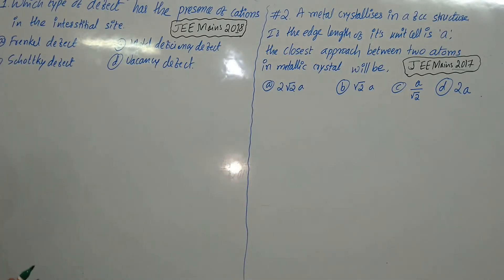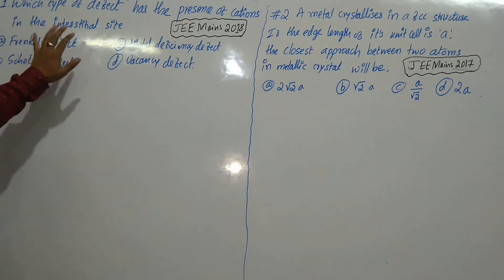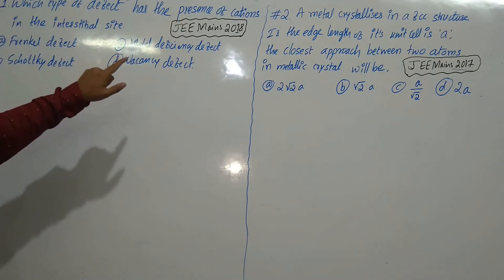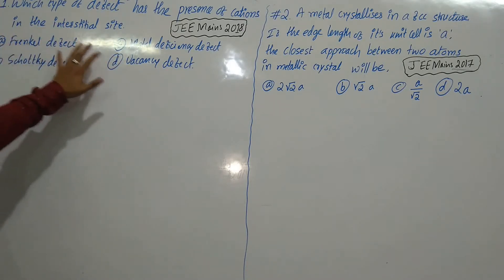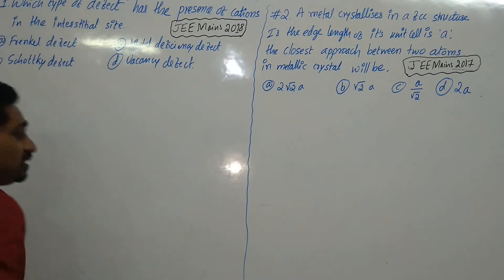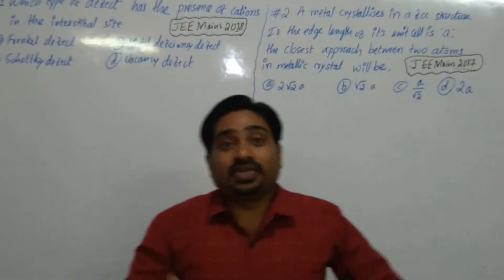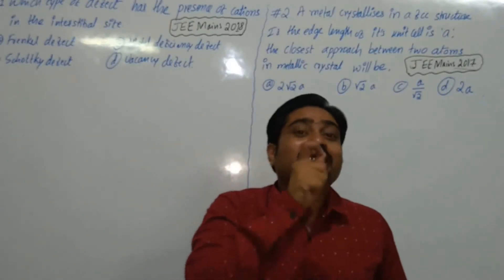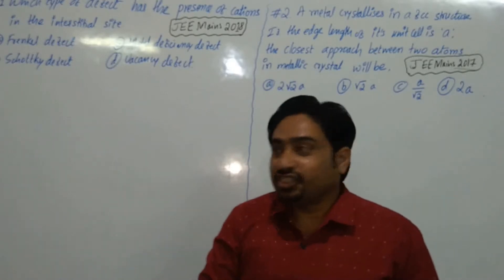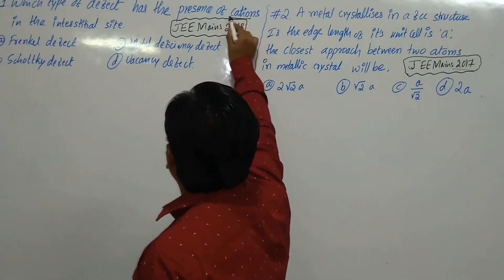So these are simple problems — let us solve them very easily. The question is: which type of defect has presence of cations in the interstitial site? So the question asks in which type of defect the particles, especially cations, are present at the interstitial site.